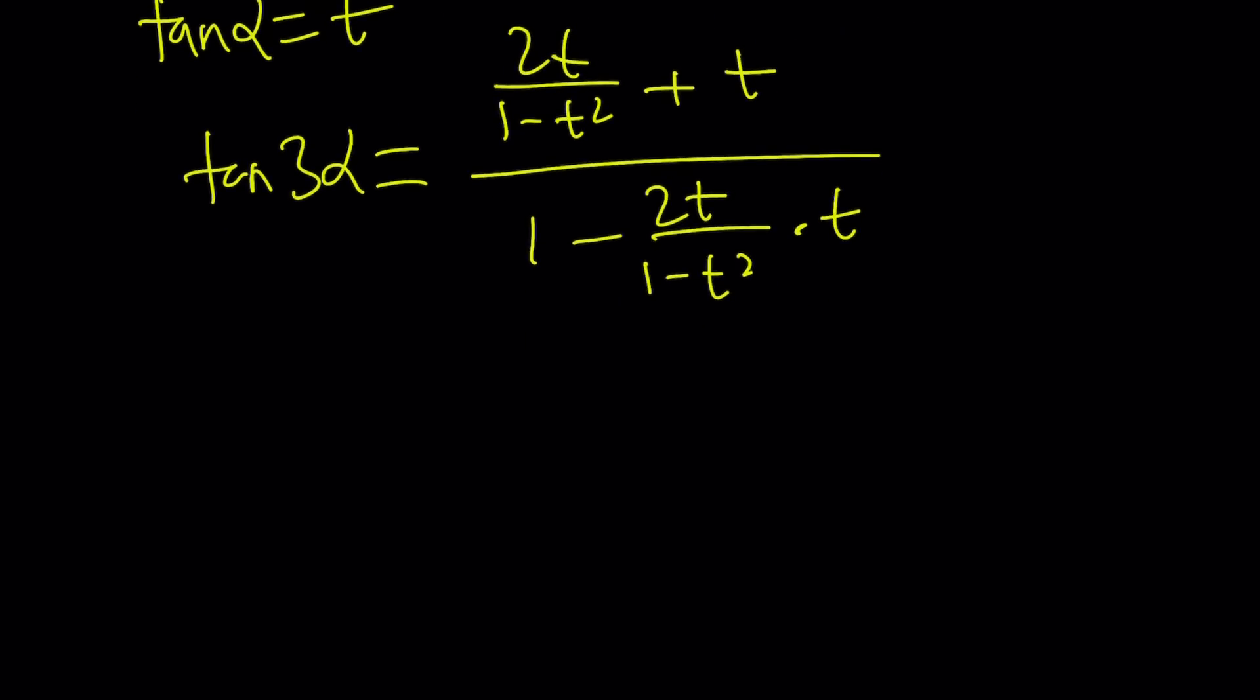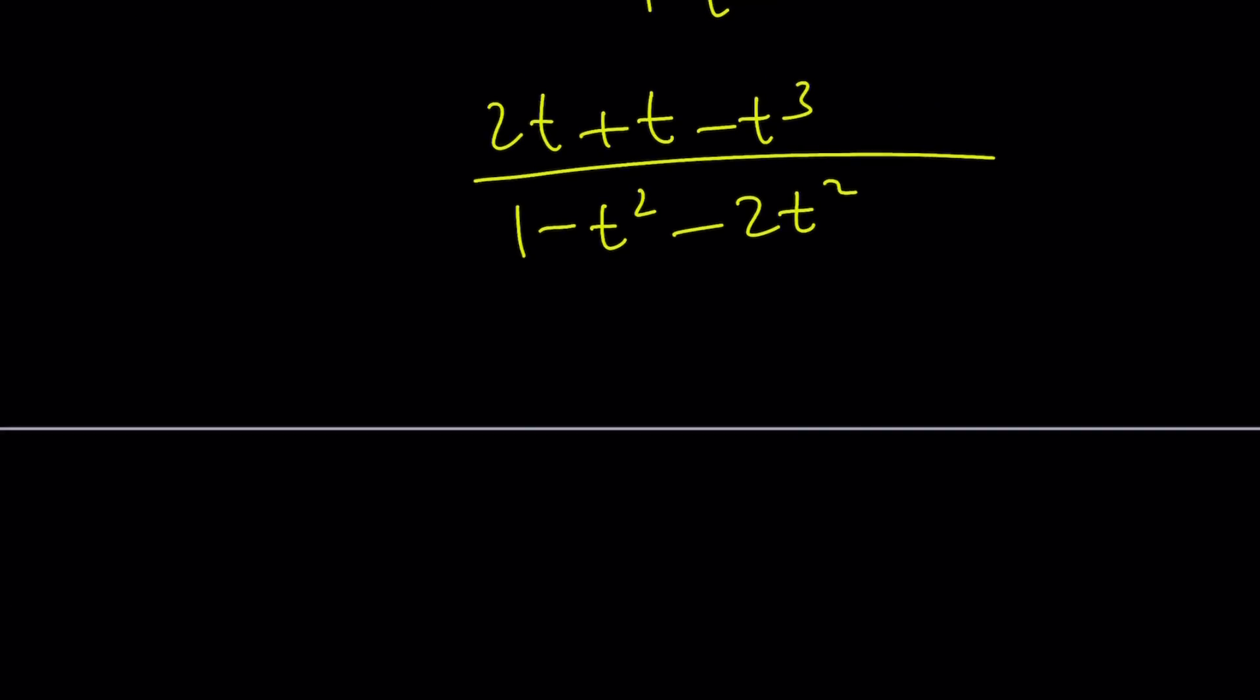That's going to be your answer. Let's simplify it. It's going to give you 2t plus t minus t cubed. I'm just making a common denominator. And forget about the denominators because they're going to cancel out. And we have 2t squared here. Let's put it there. And then we're going to have 1 minus t squared minus 2t squared and then cancel out the denominators. Make sense?